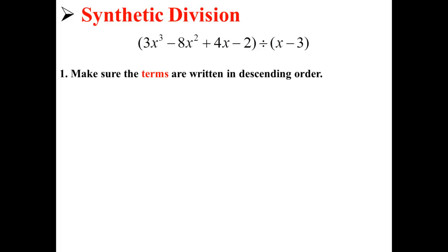Step 1 is to make sure the terms are written in descending order by degree. Here, I've already done that. Next, we write out the coefficients of each term as shown below. So here we have the coefficients: 3, -8, 4, and -2.